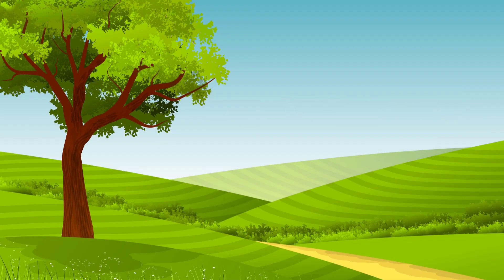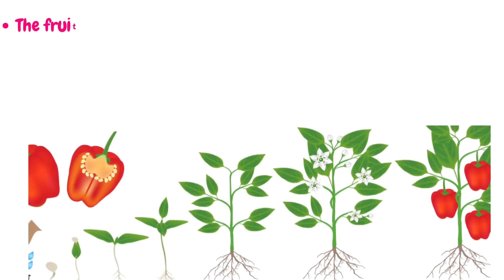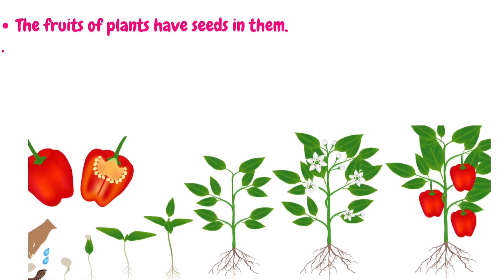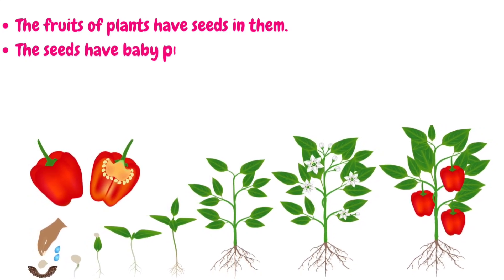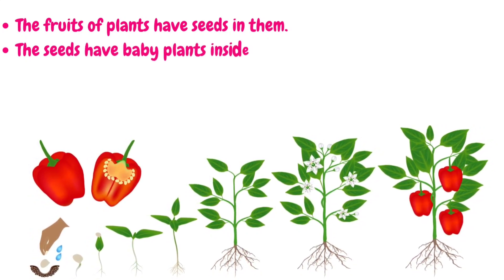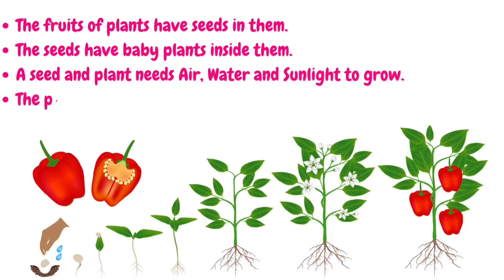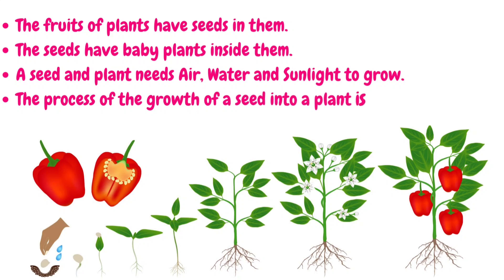Germination: The fruits of plants have seeds in them. The seeds have baby plants inside them. A seed and plant needs air, water and sunlight to grow. The process of the growth of a seed into a plant is called germination.